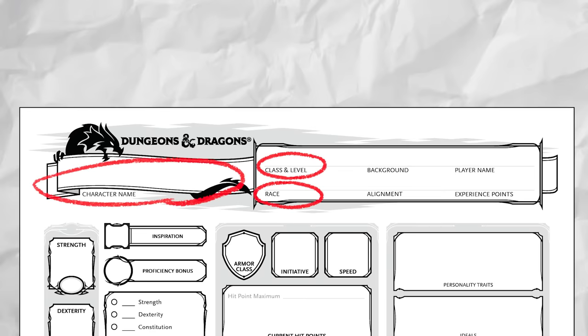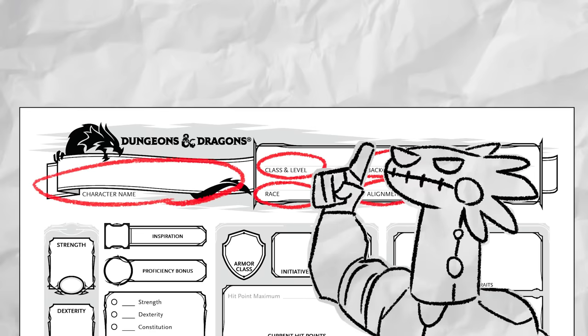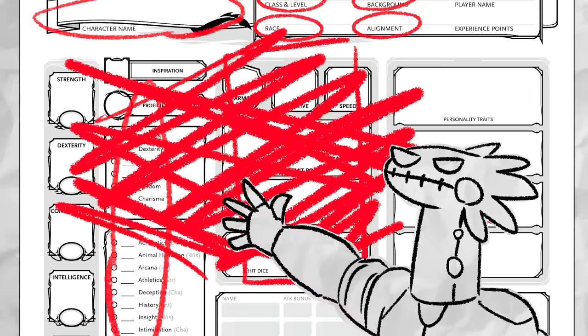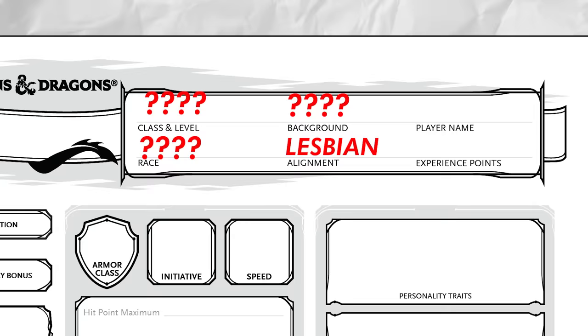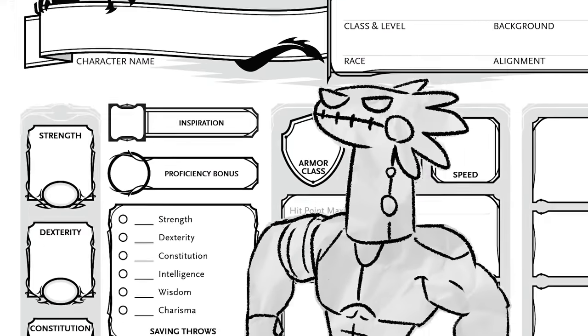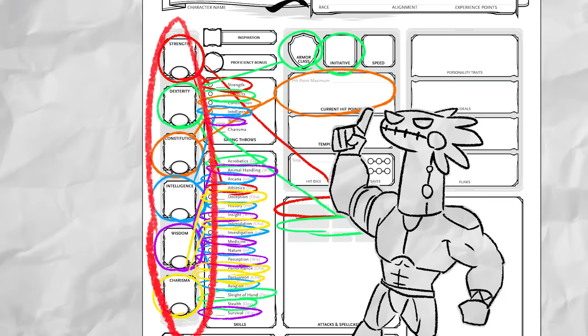First of all, at the top we have the basics: name, class, race, background, and dumb Buzzfeed quiz results. These things will determine later things, so don't worry about those things until we come to them later. But if you don't know what you want those to be yet, that's okay. We can mosey on over to this Tower of Pimps, which will be the most important part of your entire sheet.